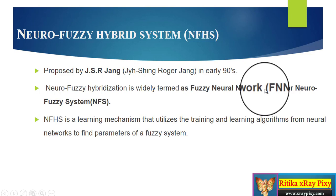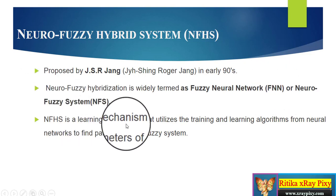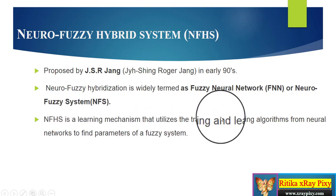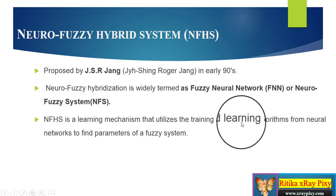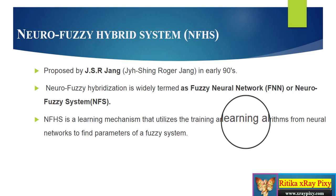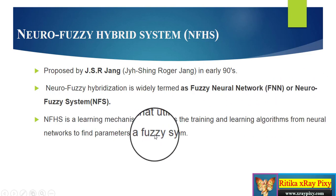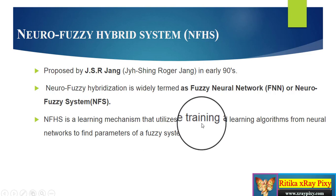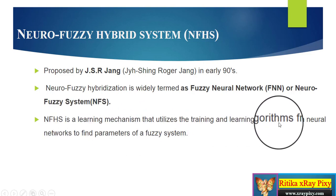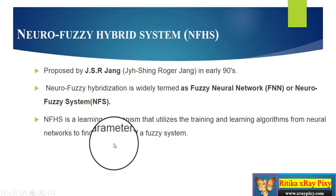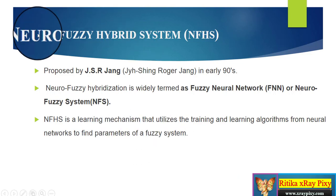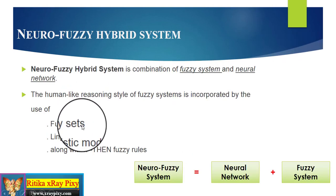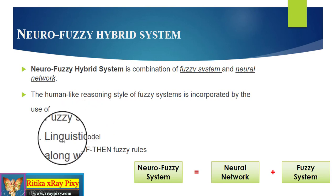A neuro-fuzzy hybrid system is widely known as a fuzzy neural network or neuro-fuzzy system. Its learning mechanism utilizes machine learning algorithms. Using neural networks we train the model, and using the fuzzy system we find the parameters. When we combine these two technologies, we create a neuro-fuzzy hybrid system. The fuzzy styles we use include fuzzy sets, linguistic models, and if-then fuzzy rules.